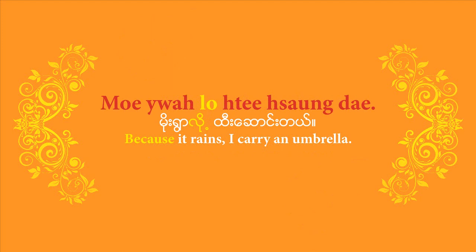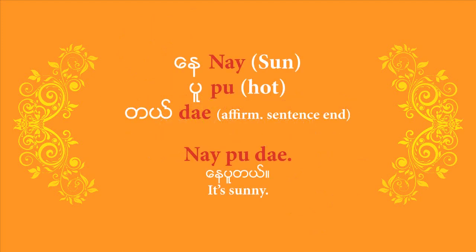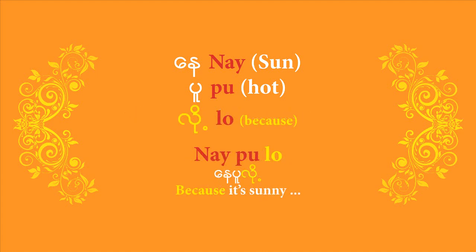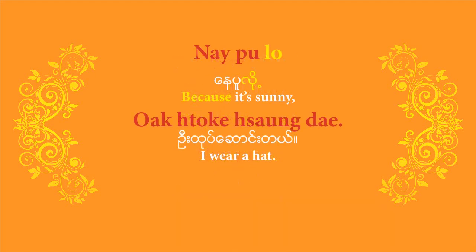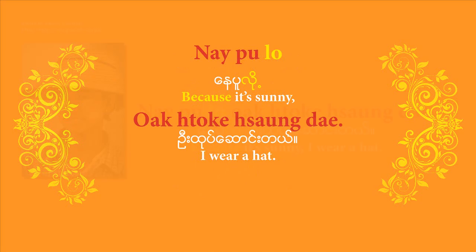Let's try another one. If you want to say 'it's sunny', you can say 'ne pude'. Let's break it down: 'Ne' is the word for sun, 'puu' is to be hot, and 'de' is the sentence-end particle. 'Ne pude' means it's hot or it's sunny. To turn it into a 'because' phrase, you replace 'de' with 'lo', giving you 'ne pude lo'. You can then say 'ne pude lo oto sounde' — because it's sunny, I wear a hat.